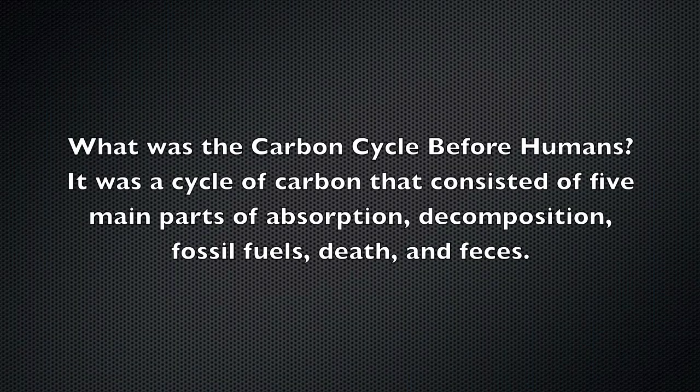What was the carbon cycle before humans? It was a cycle of carbon that consisted of five main parts: absorption, decomposition, fossil fuels, death, and feces.